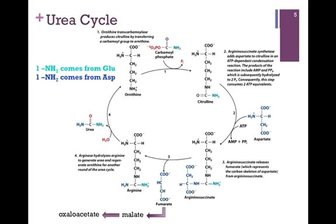Here we have the overview of the urea cycle — it is a cyclic pathway, so we begin and end at the same spot. In this case, we begin with the molecule ornithine. Our first substrate entering the pathway is the carbamoyl phosphate we just synthesized; remember, that amine group came from glutamate. In step one, we add the carbamate group to the end nitrogen of ornithine to form citrulline, releasing inorganic phosphate in the process.